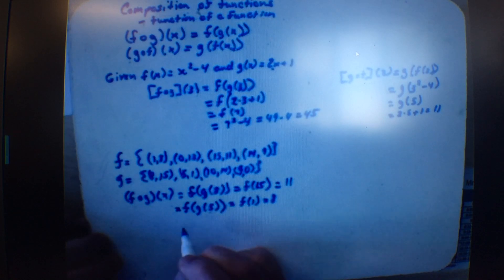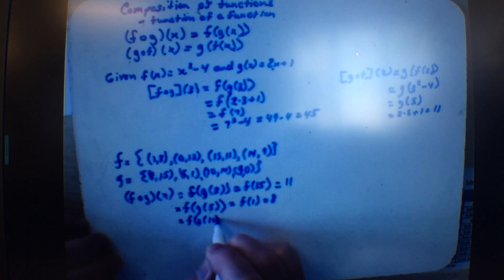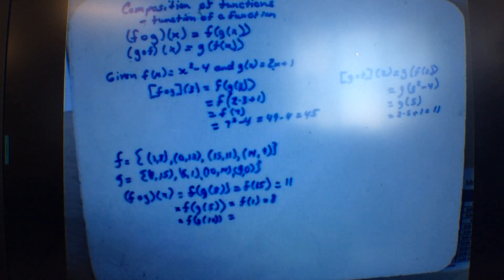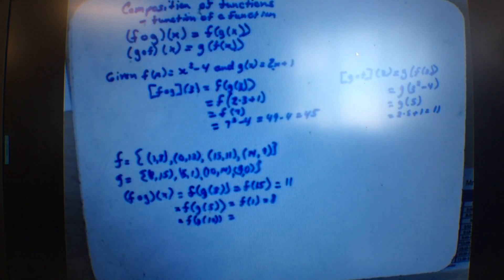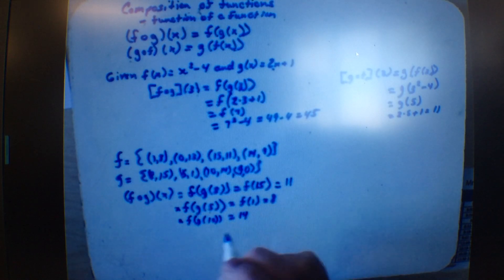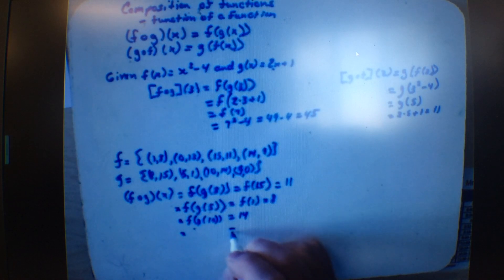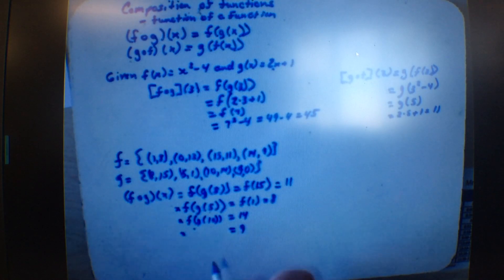What is the next one — f of g of 10? g of 10 is 14, and f of 14 is 9. So the last answer is 9.